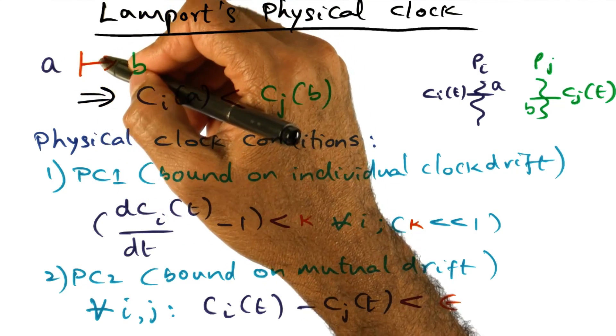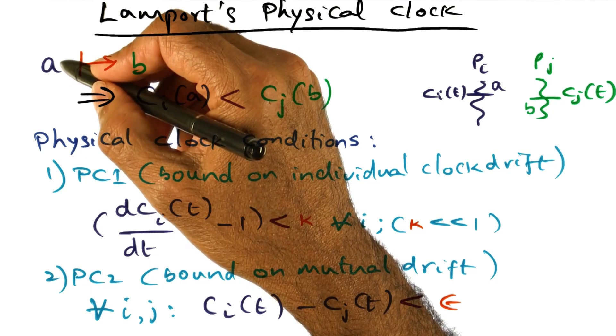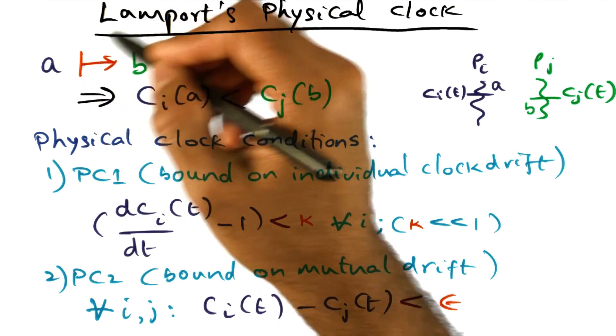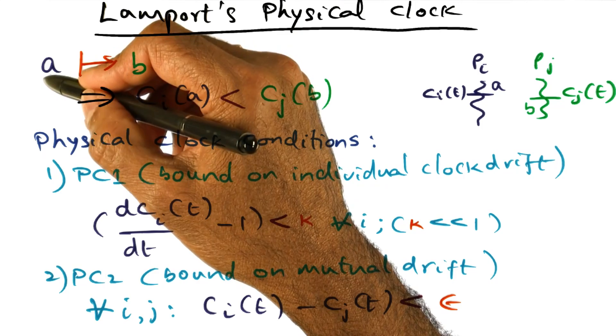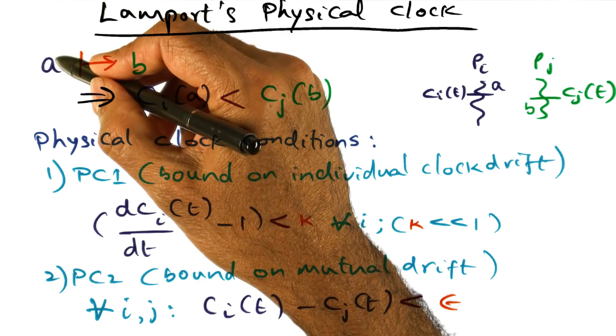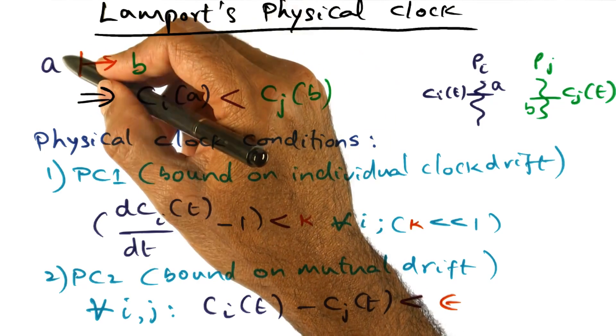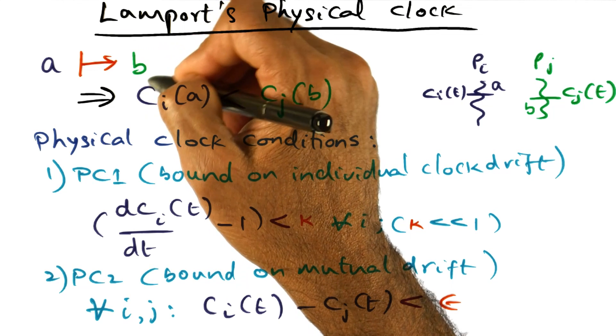So this is saying that in physical time, in real time, event A in the distributed system happened before B. So if I want to make sure that an event A in the distributed system anywhere happened in absolute real time before B.